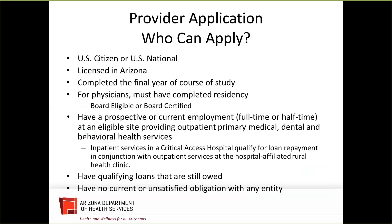These are additional eligibility requirements for providers. You must have current or prospective employment either full-time or half-time at an eligible site providing outpatient primary care services. With our expansion, inpatient services are allowed only if you're working in a critical access hospital providing outpatient services at a hospital-affiliated rural health clinic. To qualify for year 3, you must have qualifying loans still owed and cannot have any unsatisfied obligations with any entity other than the state loan repayment program.